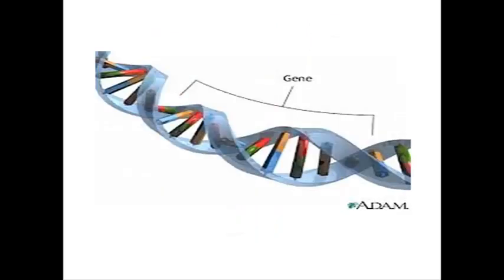DNA consists of genes, which are a unit of information that will lead to the production of a protein. These genes leading to protein will determine structure and function in the organism's organs, tissues, and also the cells.